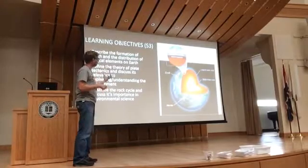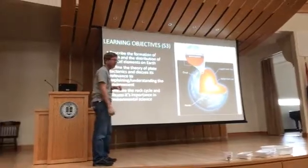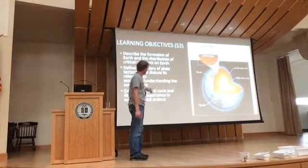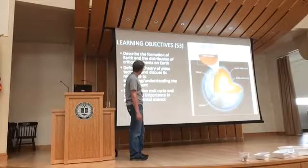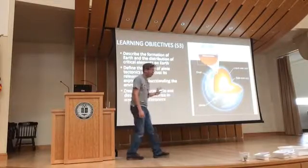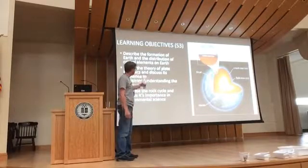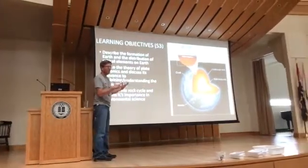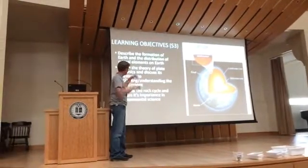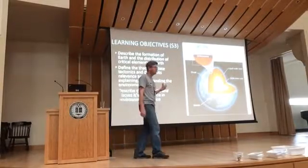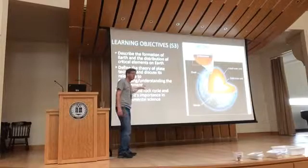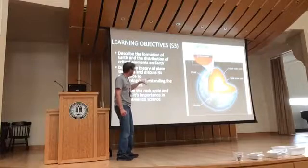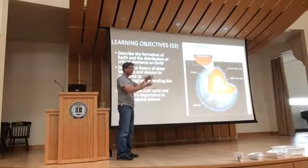So the formation of Earth — think of it as the formation of Earth as we know it. The critical distribution of elements, the theory of plate tectonics — that's a big part of our conversation today. We want to be able to define it, explain how we know or why we think it's happening. And then the rock cycle, which describes how matter is moving through the solid Earth.